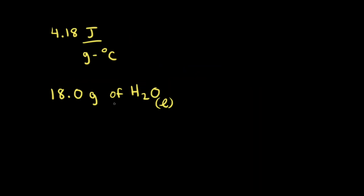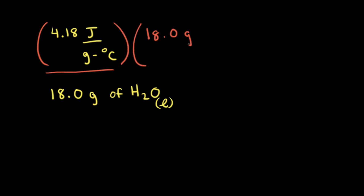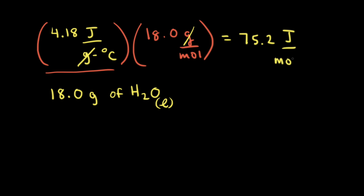Let's calculate the molar heat capacity of water from the specific heat. If we multiply the specific heat of water by the molar mass of water, which is 18.0 grams per mole, the grams cancel out, and that gives us 75.2 joules per mole degree Celsius — the molar heat capacity of water.